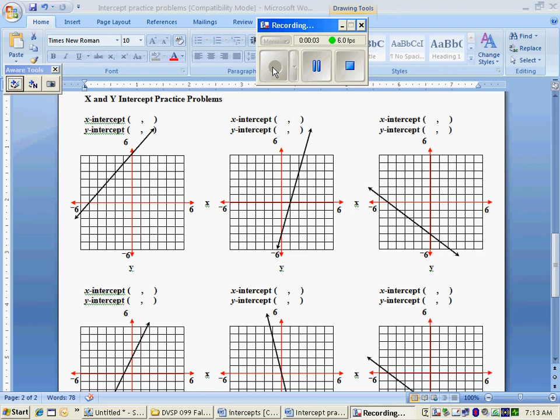Practice problems for x and y intercepts. Locating on the axes and counting over, the x is negative 5 and the y is 0 for the x-intercept. And for the y-intercept, 0 in the x, 6 in the y.